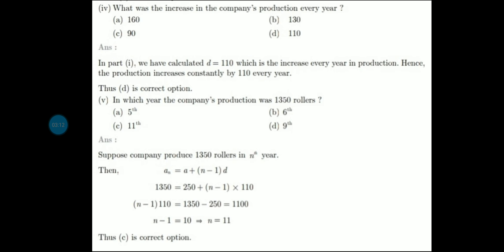Now let's see, in which year the company's production was 1350 rollers? Obviously, here we have an An value given here and our formula is An equals A plus N minus 1 into D. When we put the values, we solve for N to find which year it was.